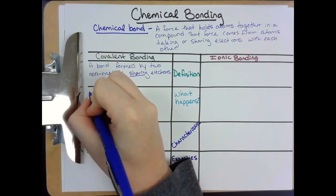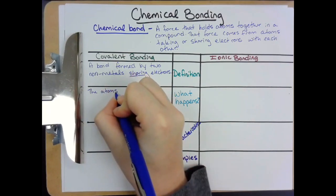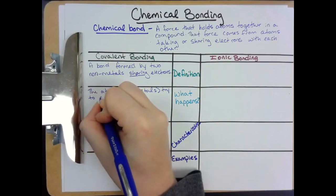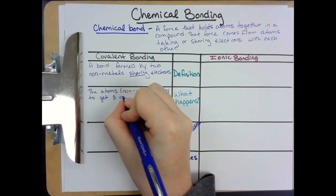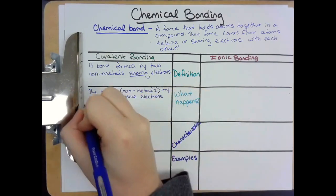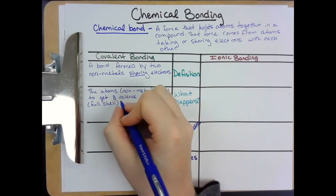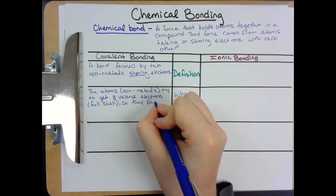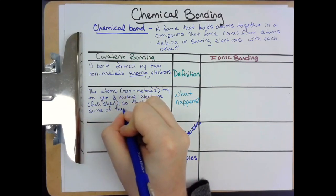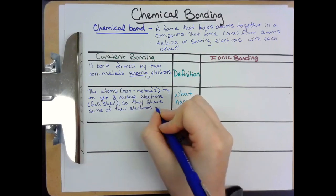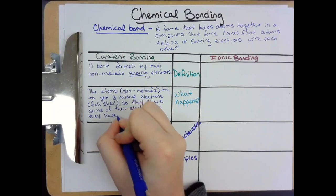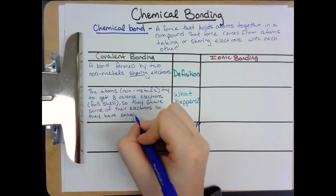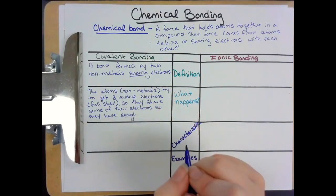So we write that down: covalent bonds happen when the nonmetals try to get eight valence electrons, which is a full shell. So they end up sharing electrons with each other so they can have enough. Nonmetals try to get eight valence electrons, so they share some of their electrons so they have enough. That's why covalent bonds happen.